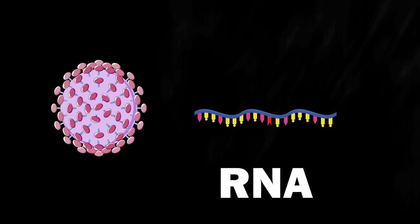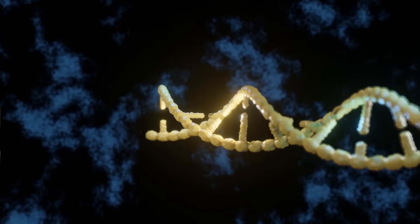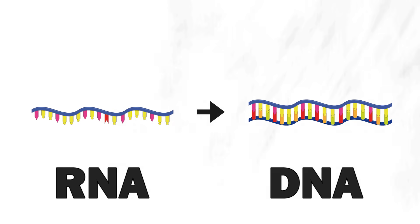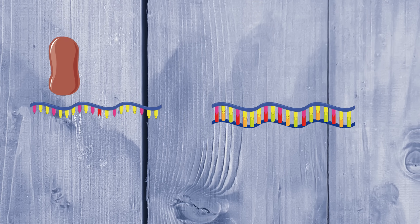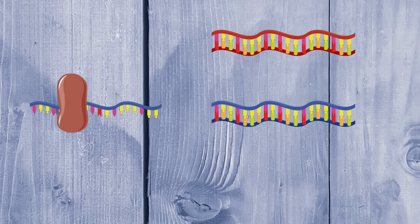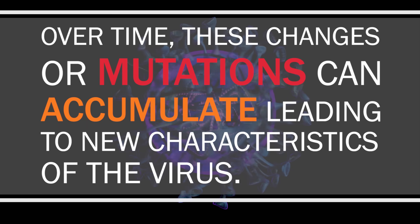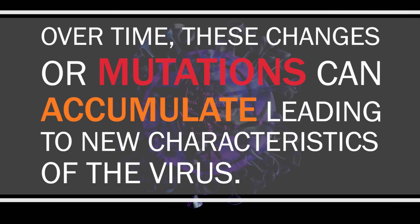HIV is a retrovirus, meaning it stores its genetic information as RNA. As we've seen, HIV must convert its RNA into DNA using reverse transcriptase. Each time this conversion occurs, there is a small chance that the produced sequence is slightly different from the previous one. Over time, these changes — mutations — can accumulate, leading to new characteristics of the virus.